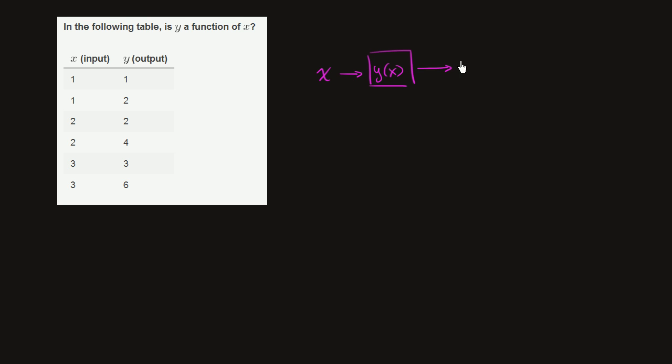If it spit out multiple values of y, then it might be a relationship, but it's not going to be a function. So this is a function. If we had a situation where we input x into a box and it could be multiple possible y's, then this is not a function.